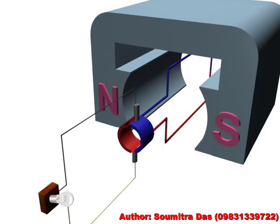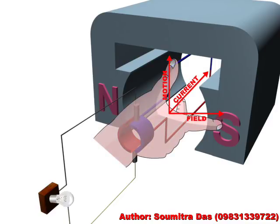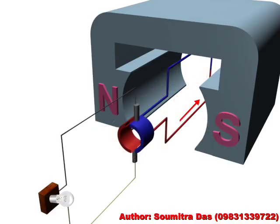Suppose the coil is rotated anti-clockwise by the help of an engine. At this position, the red part of the coil moves up and the blue part moves down. Applying Fleming's right hand rule to the red part of the conductor, we get the direction of the induced current like this, in this direction.